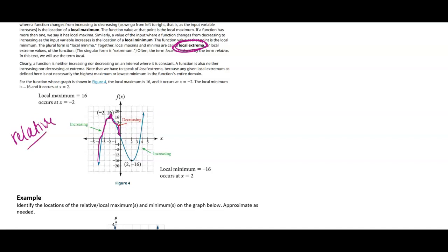It doesn't mean it's the highest value overall on the function. In fact, since this function is continuous and goes from negative infinity to positive infinity in its range, it wouldn't have an absolute maximum. Relative or local just means the function changes from increasing to decreasing.